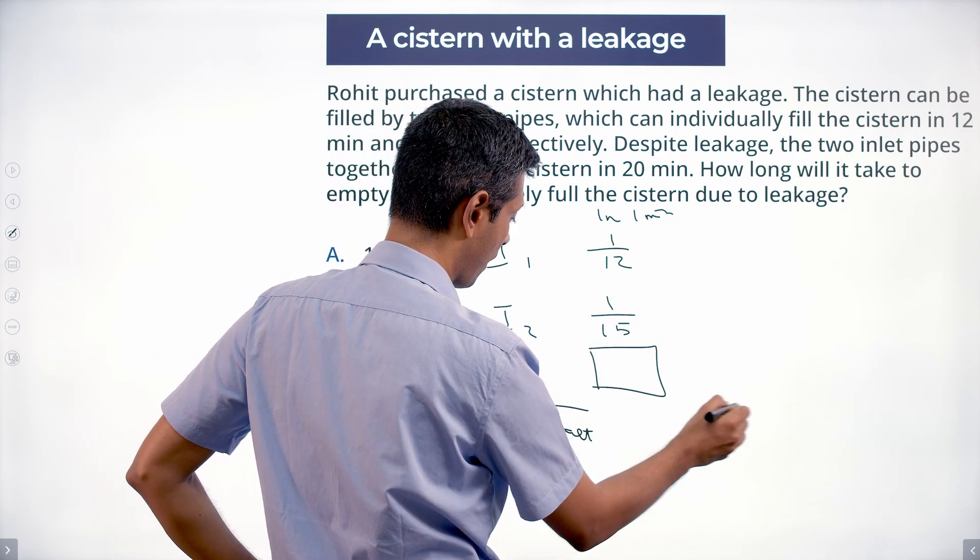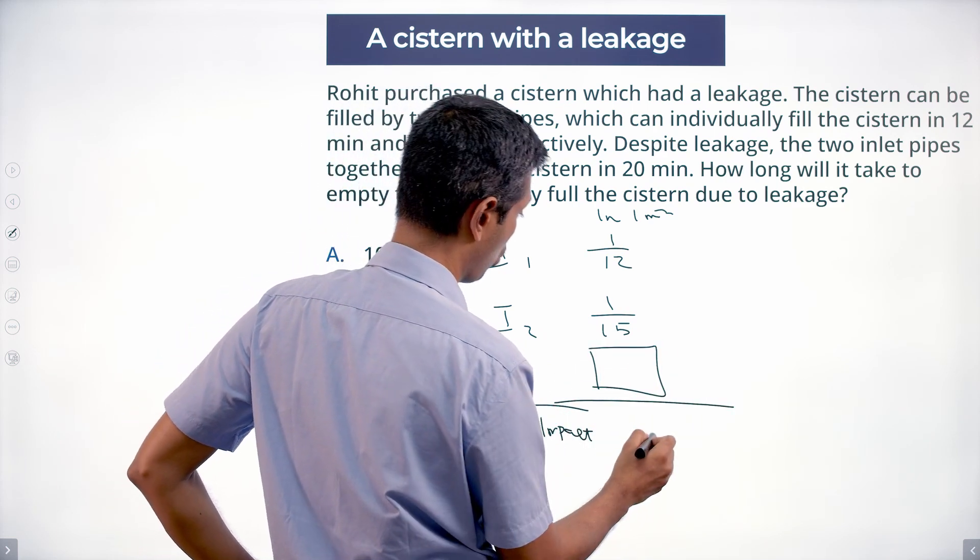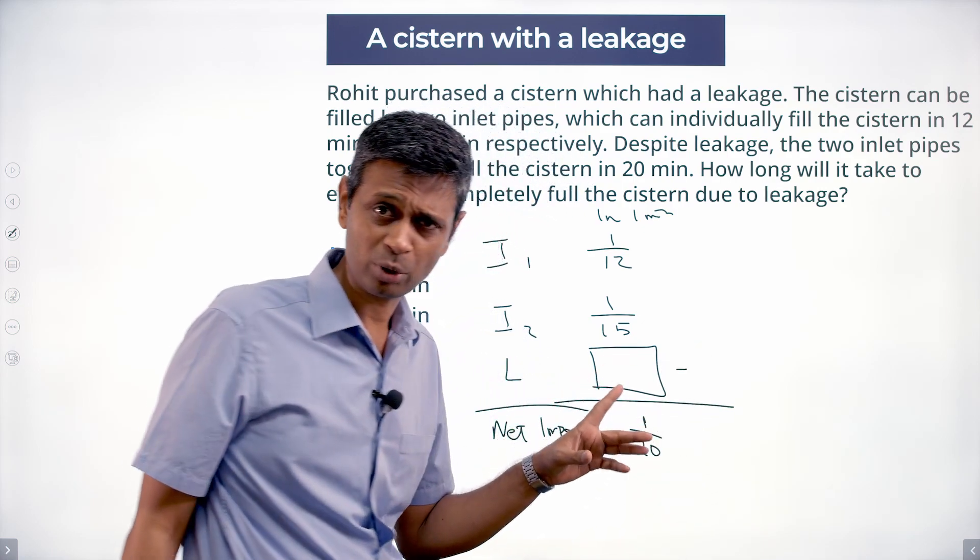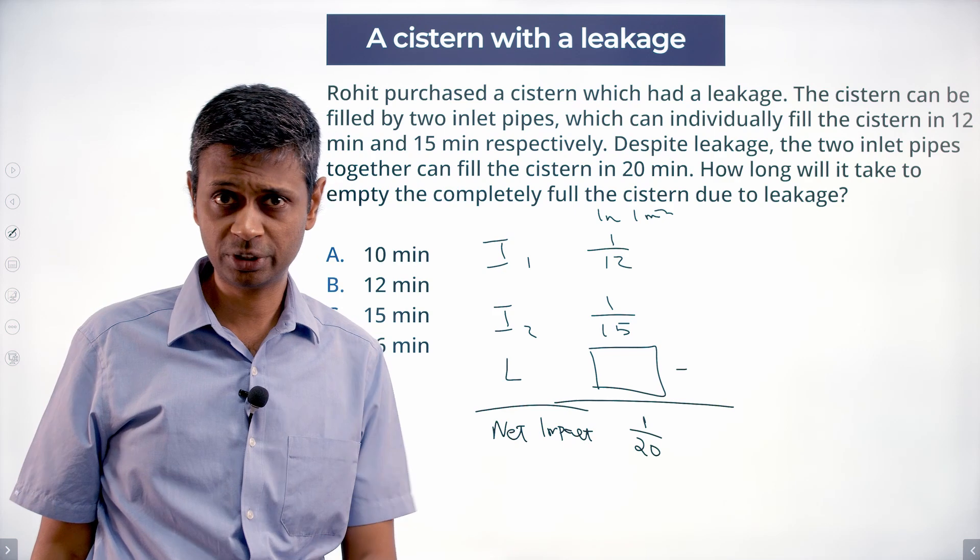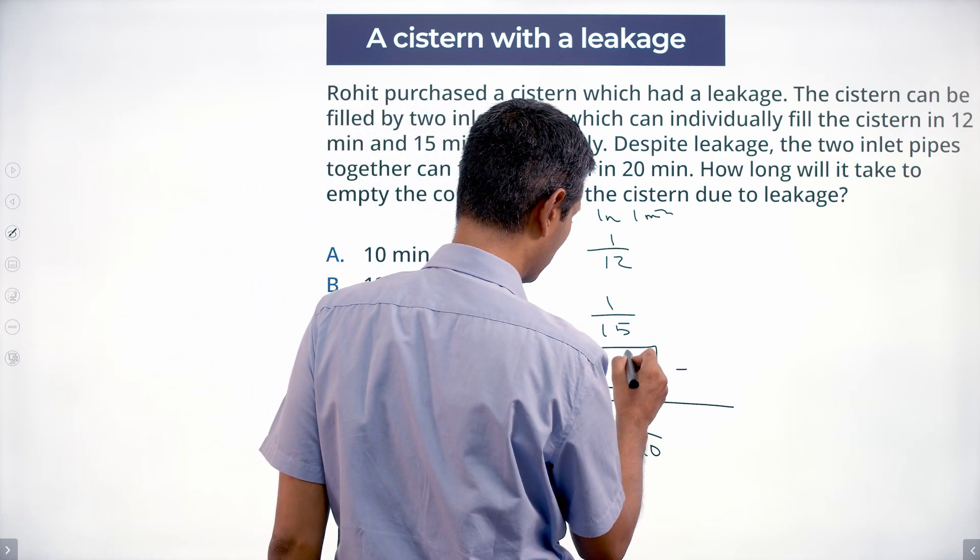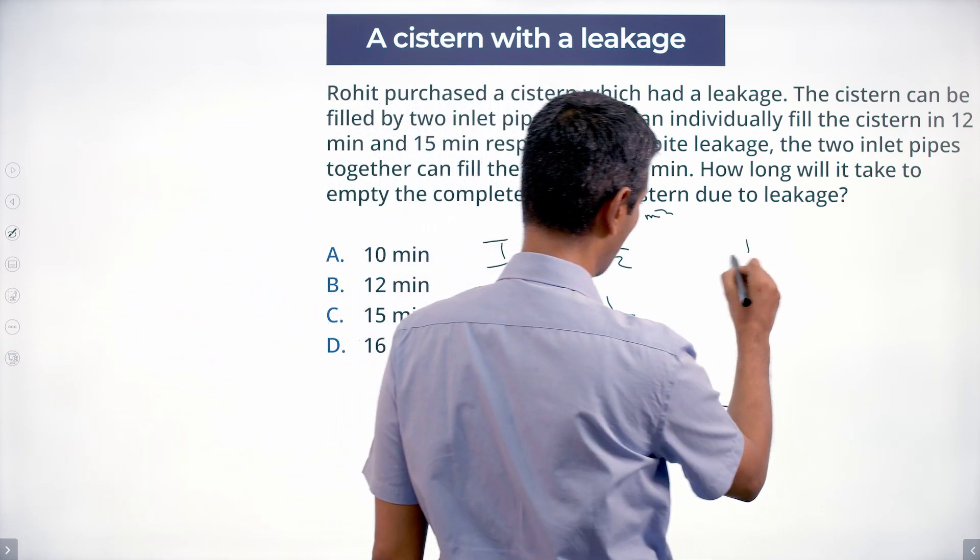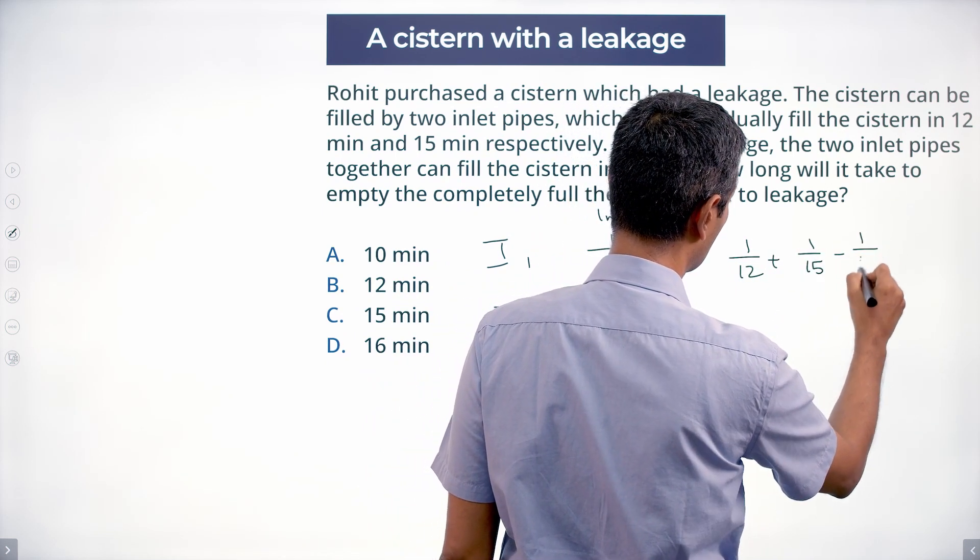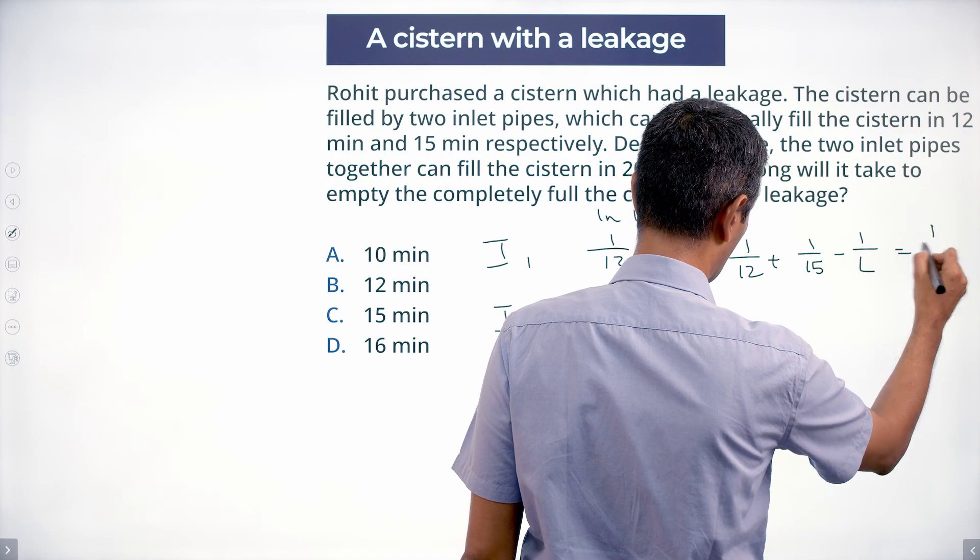This we don't know, but the total impact is one by twenty. This is a minus; that much we know because it's leaking from here. Let's say this leaks at the rate of one by L. One by twelve plus one by fifteen minus one by L is one by twenty.